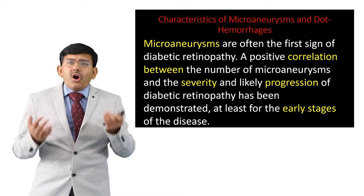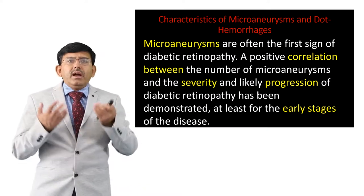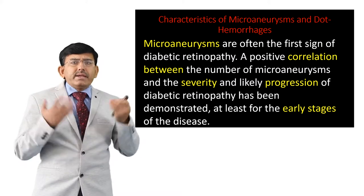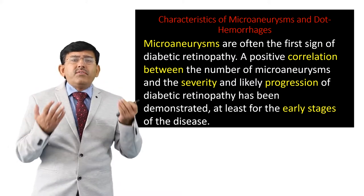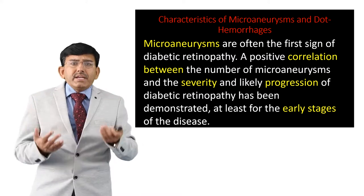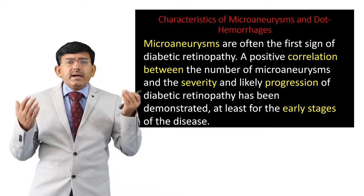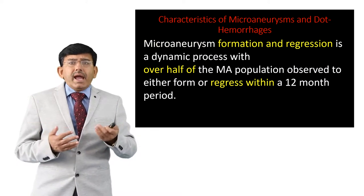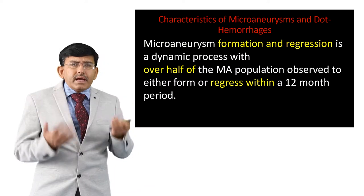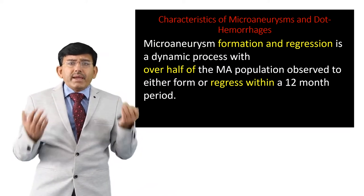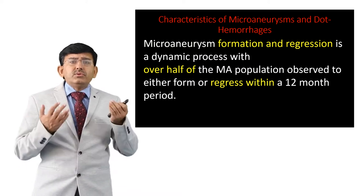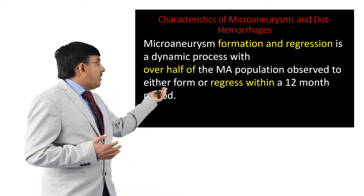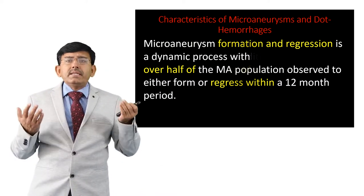Microaneurisms are often the first sign of diabetic retinopathy. A positive correlation between the number of microaneurisms and the severity and likely progression of diabetic retinopathy has been demonstrated, at least for the early stage of the disease. Microaneurism formation and regression is a dynamic process, with over half of the microaneurism population observed to either form or regress within a 12-month period.